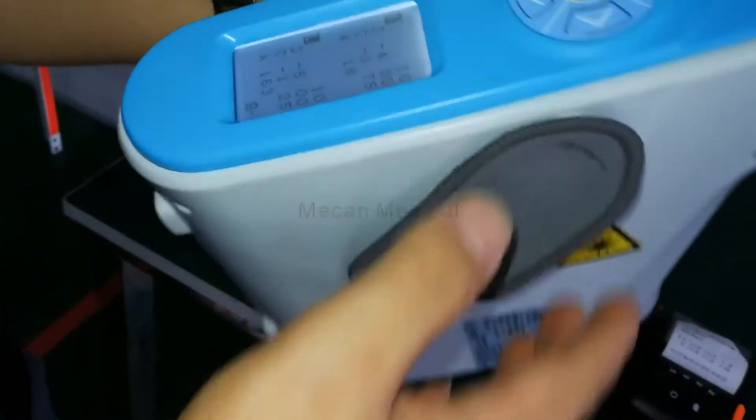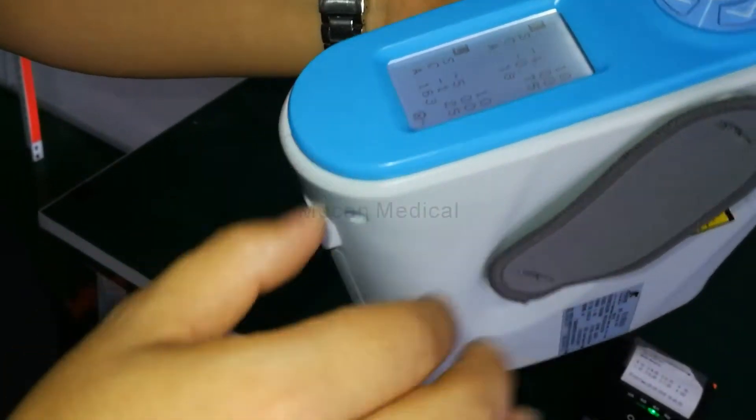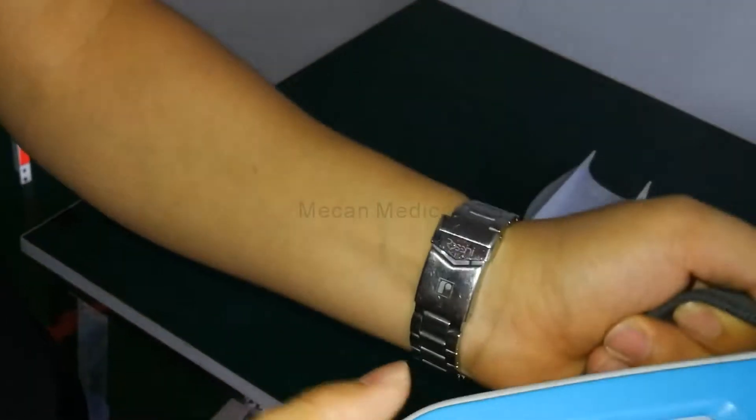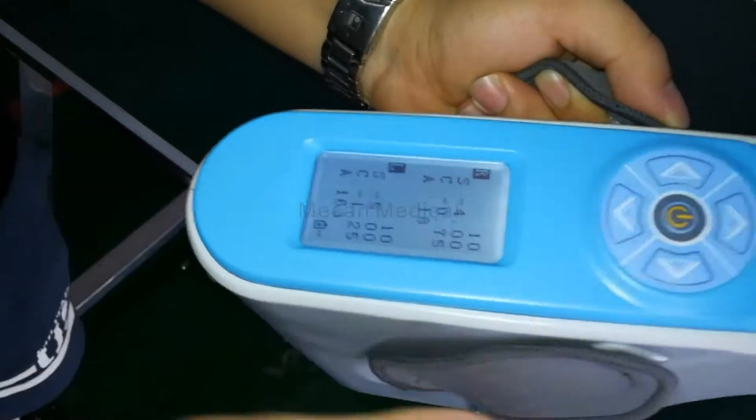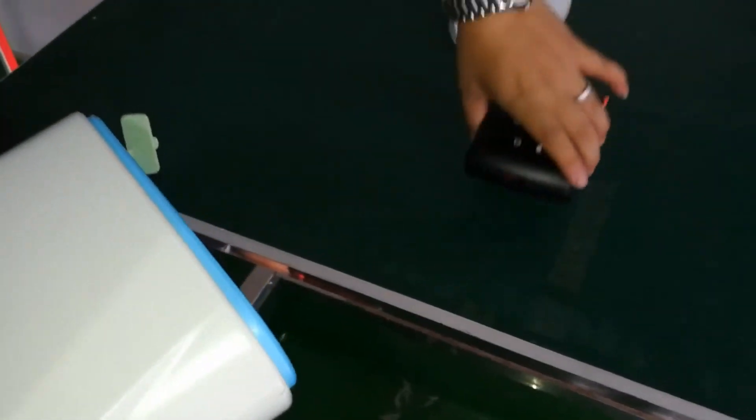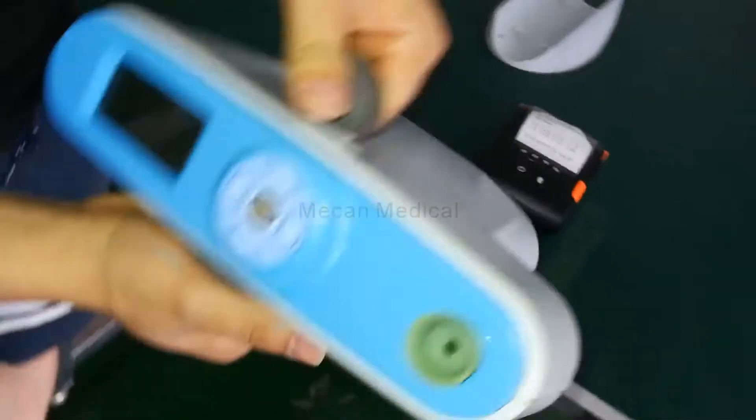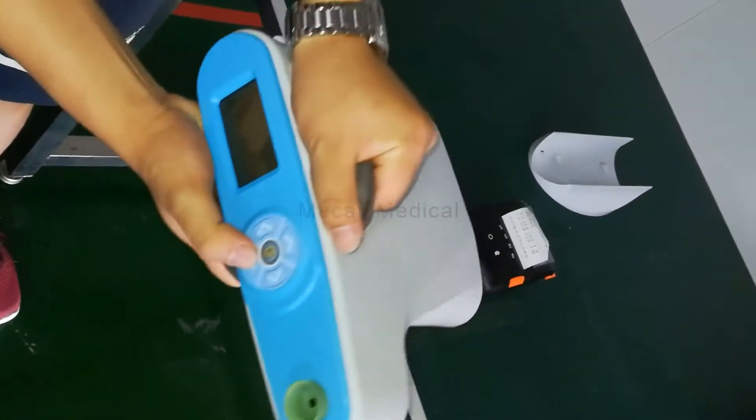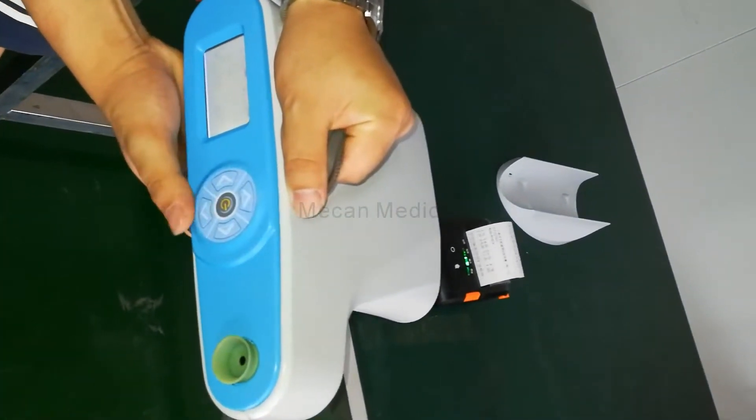I will show you how to print the result. First you get the consequence, and then use the zero to aim at the printer this place, and then click this. Now you get the result. Finish.